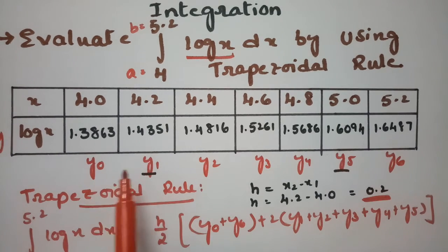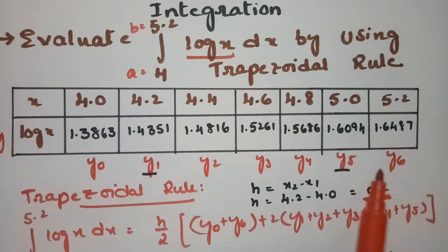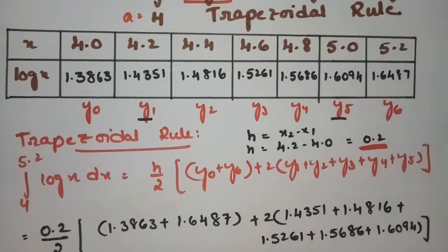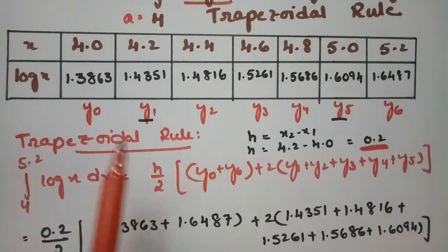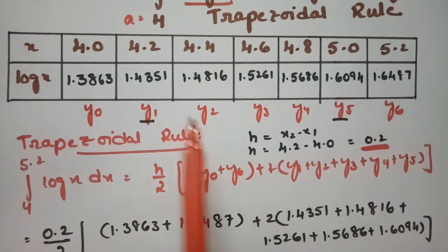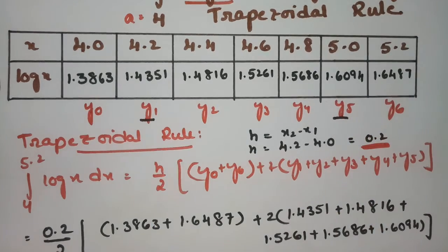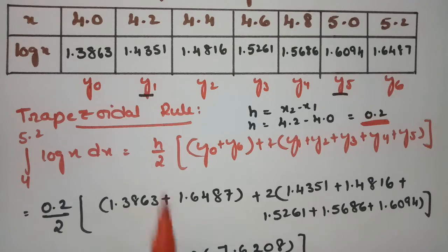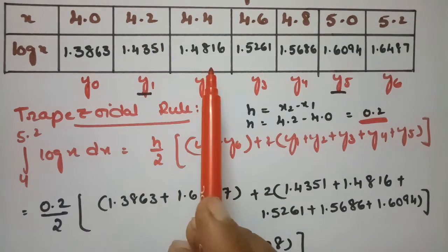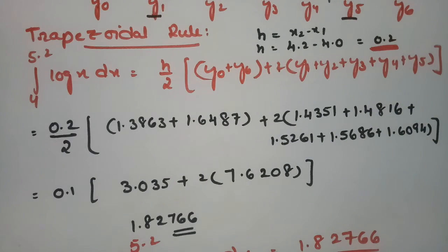So we have to plot all the values as y0, y1, y2, y3, y4, y5 and y6. According to the trapezoidal rule the formula is h by 2 times the initial ordinate plus the final ordinate plus 2 times the remaining ordinate from y1 till y5. Now we substitute all the values by looking at this table and that final value we got as 1.82766.